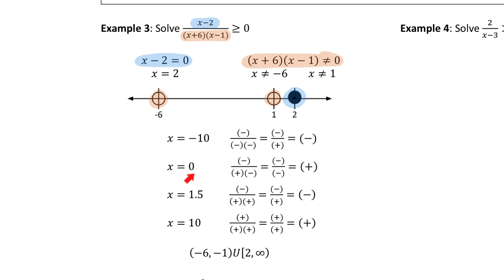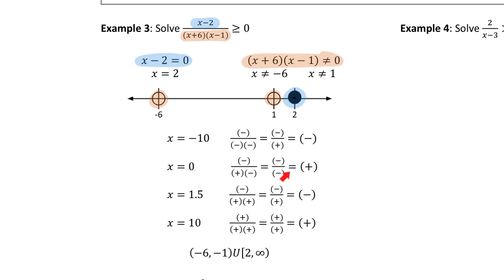Testing x = 0 between -6 and 1: (0-2) is negative, (0+6) is positive, (0-1) is negative. Negative over positive times negative gives positive divided by negative — that's negative. Do we follow?